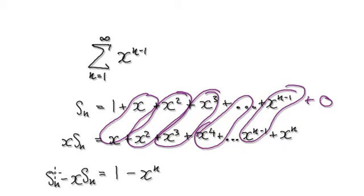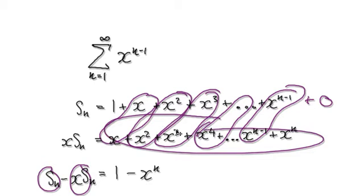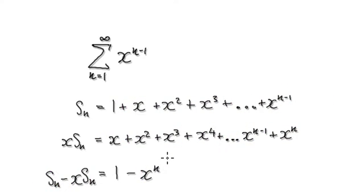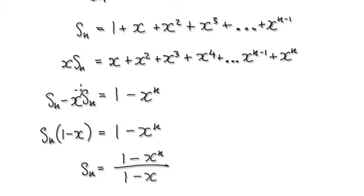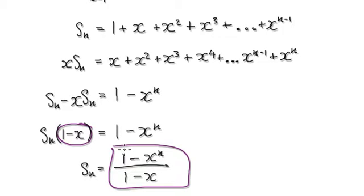So S_n take away x times S_n: that leaves you with 1, and then 0 take away the last term gives you minus x to the power of n. Now factorize the S_n, and then divide both sides, so S_n equals this formula here.